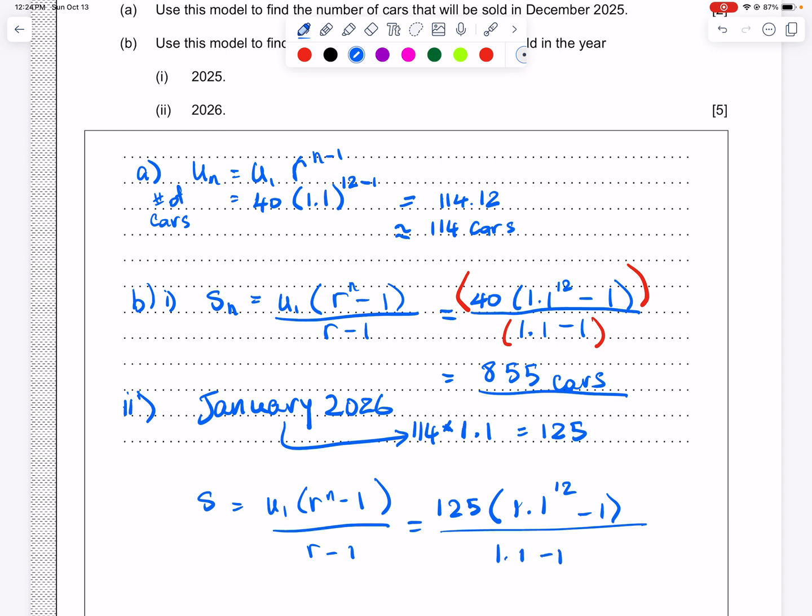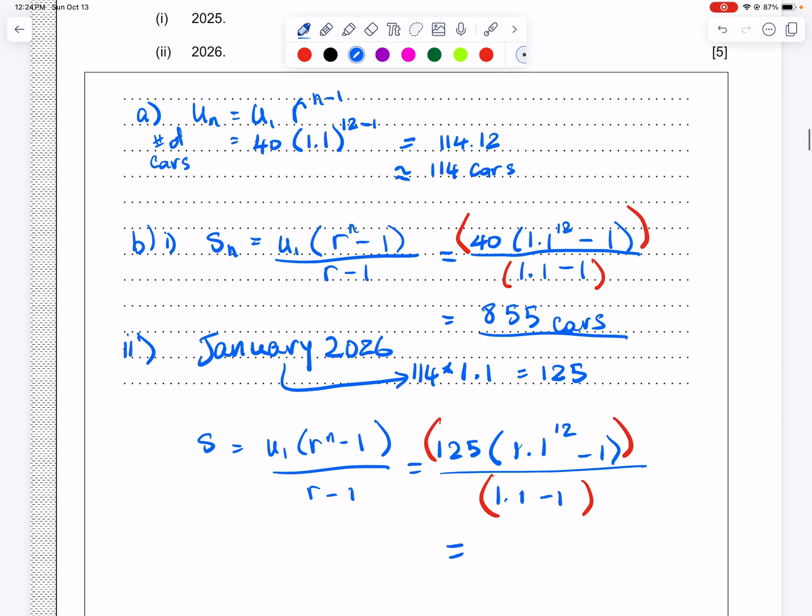And again, remember to set this up with your parentheses and the calculator. And once you calculate that, you should get that in 2026, there were 2,673 cars sold in all. And so this company is growing. They're doing a good job.